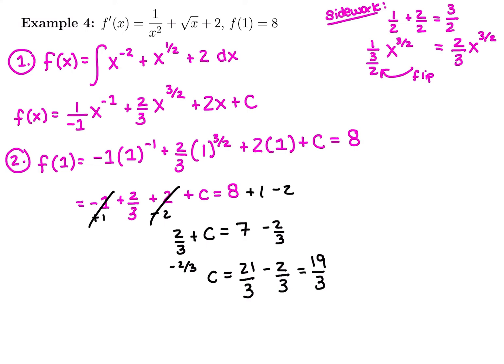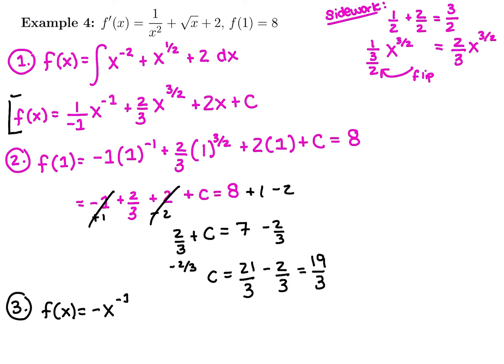And you can definitely use a calculator for all of this if you need to. But 7 times 3 is 21 thirds, minus 2 thirds gives us 19 thirds. And my last step is to just write my final answer, which is going to be combining these two pieces. So f of x was negative x to the negative 1, plus 2 thirds x to the 3 halves, plus 2x, plus 19 thirds.